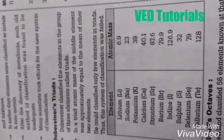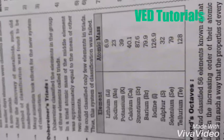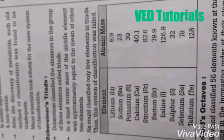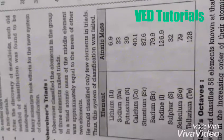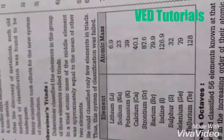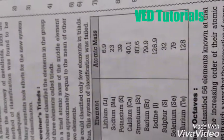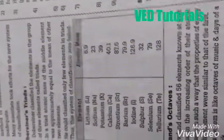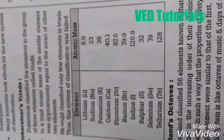So he could classify only a few elements in the triads. Thus the system of classification failed because at that time there were a lot of limitations.